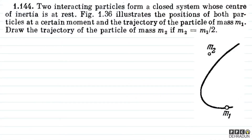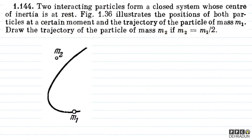Welcome students. Let's have a look at this beautiful problem from Irodov. The question says: two interacting particles form a closed system whose center of inertia is at rest. The figure illustrates the positions of both particles at a certain moment and the trajectory of the particle of mass M1.